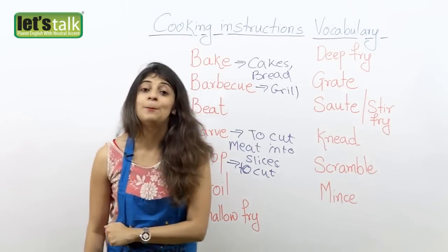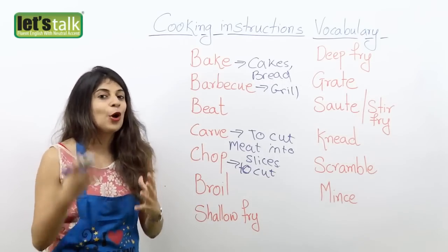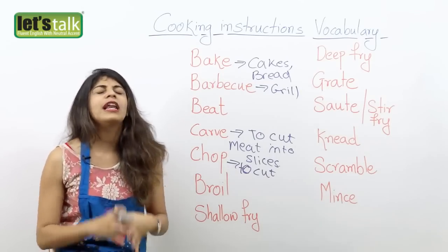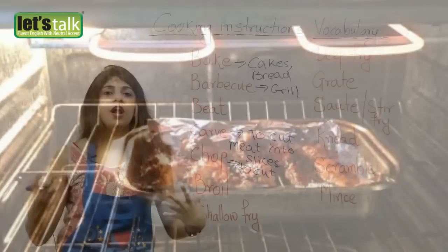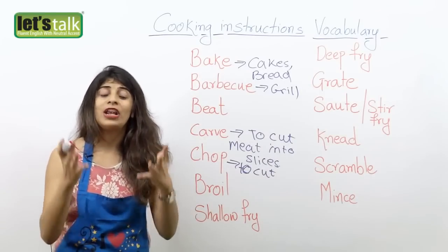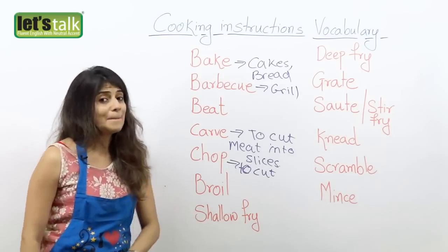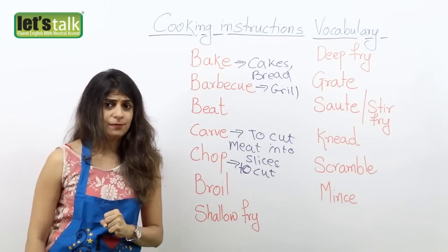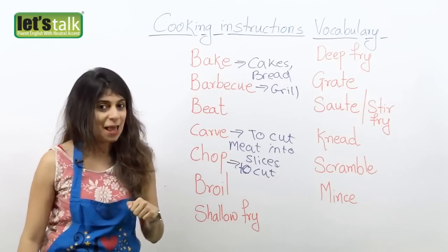Then another one here is broil. Broil means you cook your food — probably meat or even veggies — on extremely high temperatures, and in fact you broil it for a very, very long time. So you heat it on extremely high temperatures for a very long time — that's what broil means. So next time you are having broil chicken or broil chicken soup, you have to cook it on extremely high temperature.